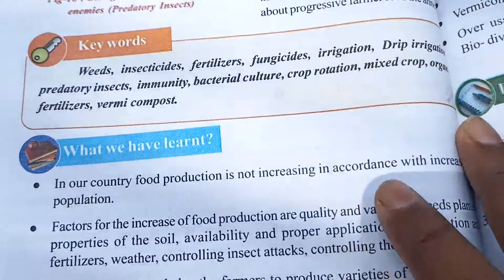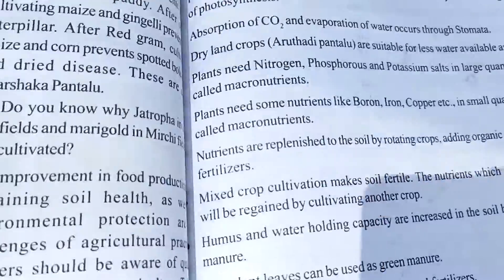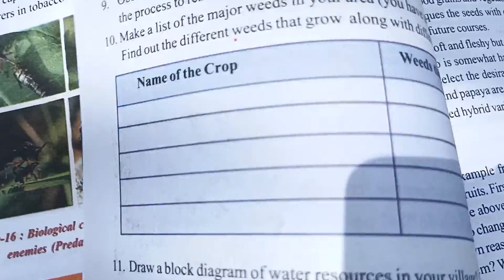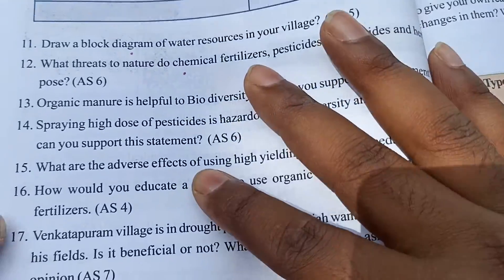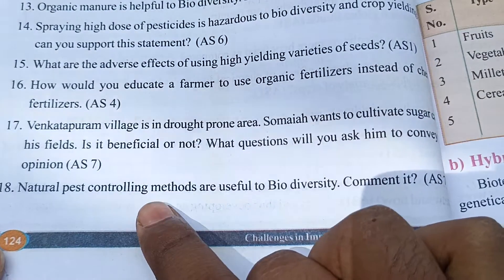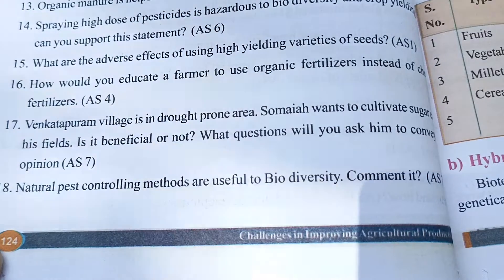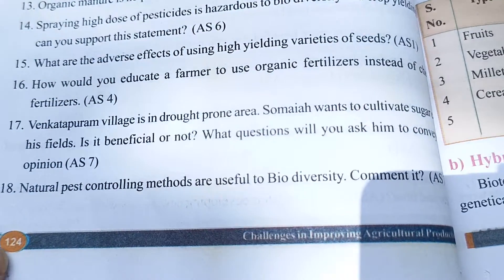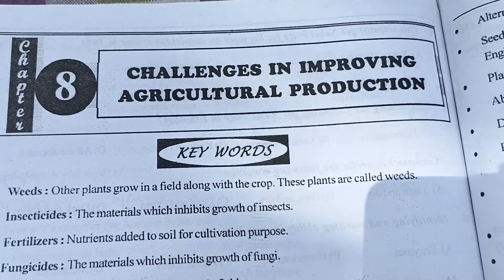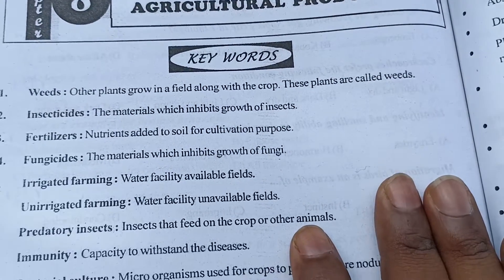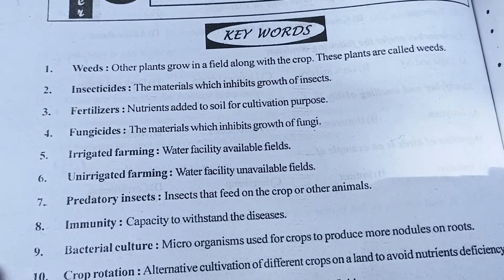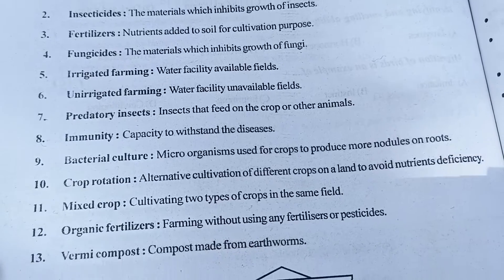We will see the first keyword, then after that we have 'what we have learned' - that is not very important for us. Then we will see the question and answer. There are a total of 18 questions in this chapter. We will see all 18 questions. We will also see activities. Now let's move to the answers. This is Chapter 8 - Challenging and Improving Agriculture Production. You can easily see the keywords here. If you have any kind of doubt, just match with your textbook.